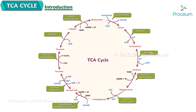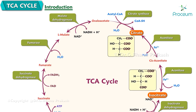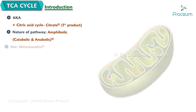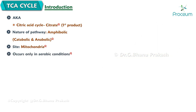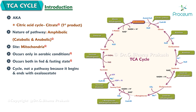TCA cycle. TCA stands for tricarboxylic acid cycle, named so because citrate and isocitrate are tricarboxylic acids. It is also called the citric acid cycle because the first product formed is citrate. The nature of the pathway is amphibolic, meaning it is both catabolic and anabolic. The site is mitochondria. It occurs only in aerobic conditions and occurs both in the fed and fasting state. TCA is called a cycle, not a pathway, because it begins and ends with oxaloacetate.